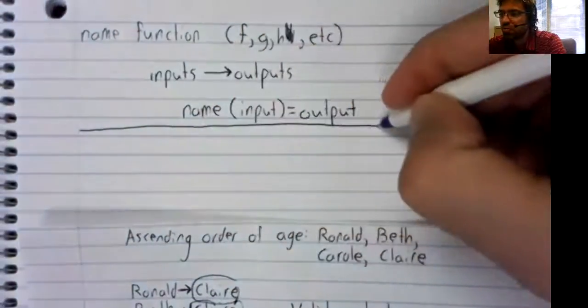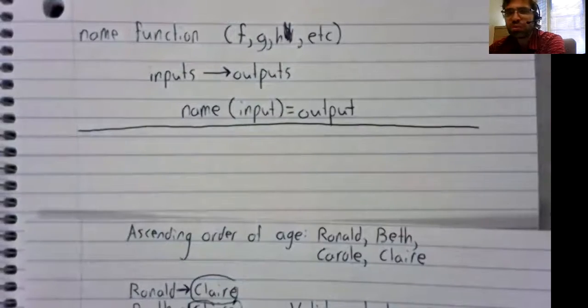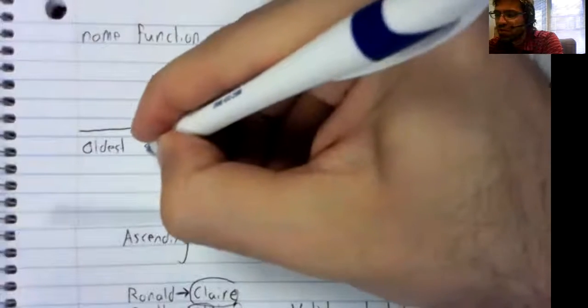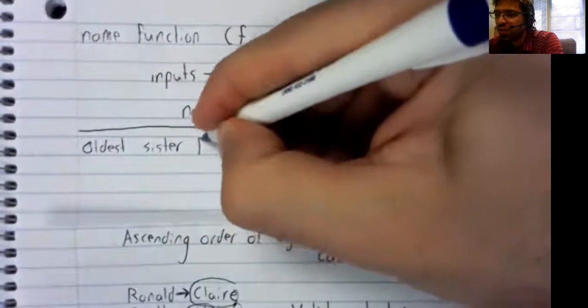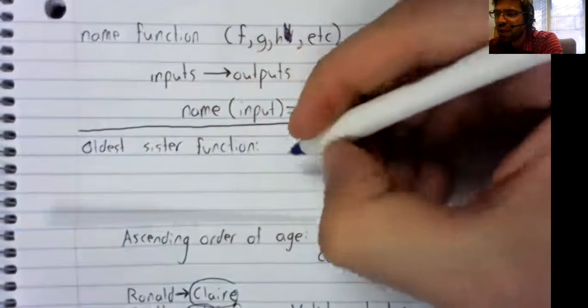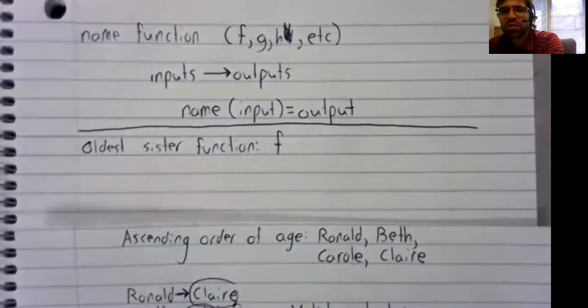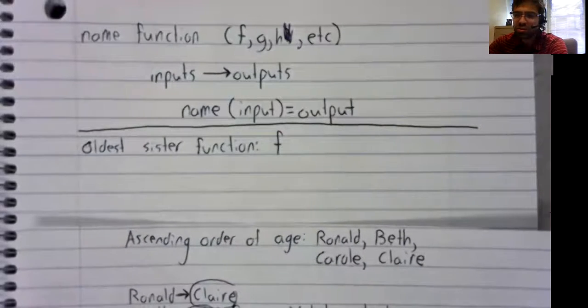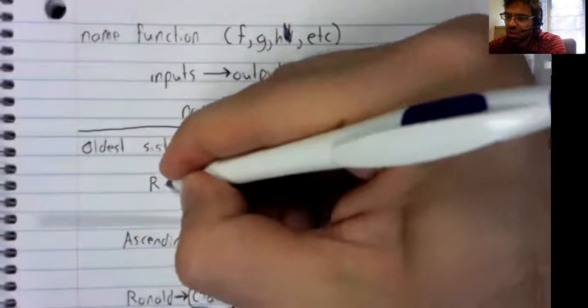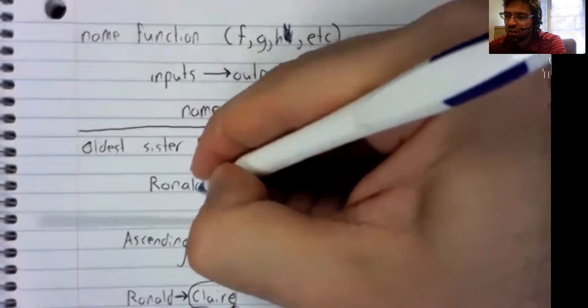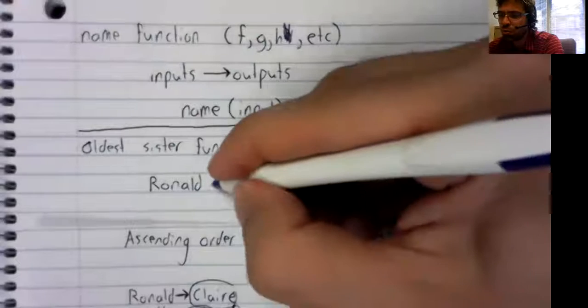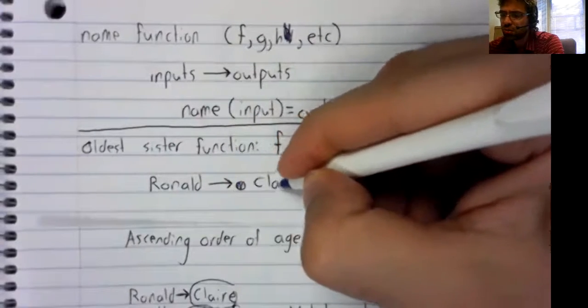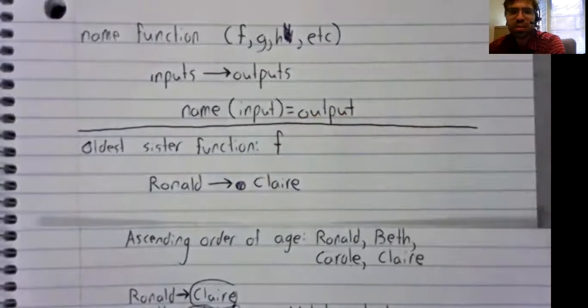So, to use this notation, we first have to give this oldest sister function a name. And let's go with lowercase f. That's the most common choice. And we see when our input is Ronald, our output is Claire.